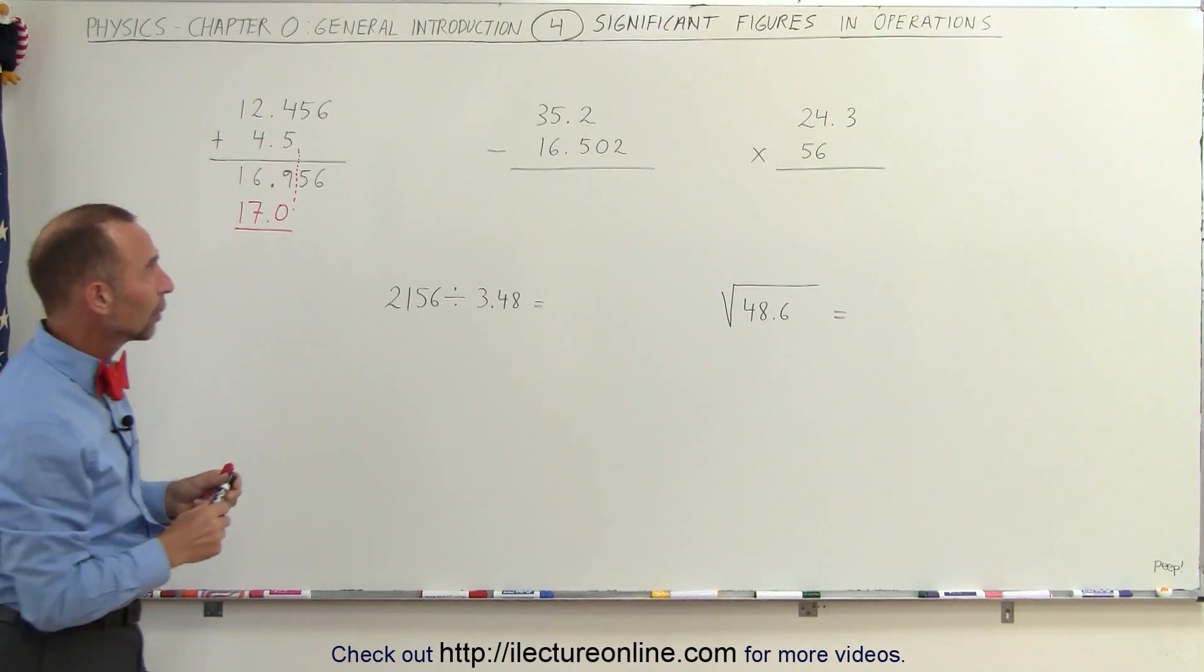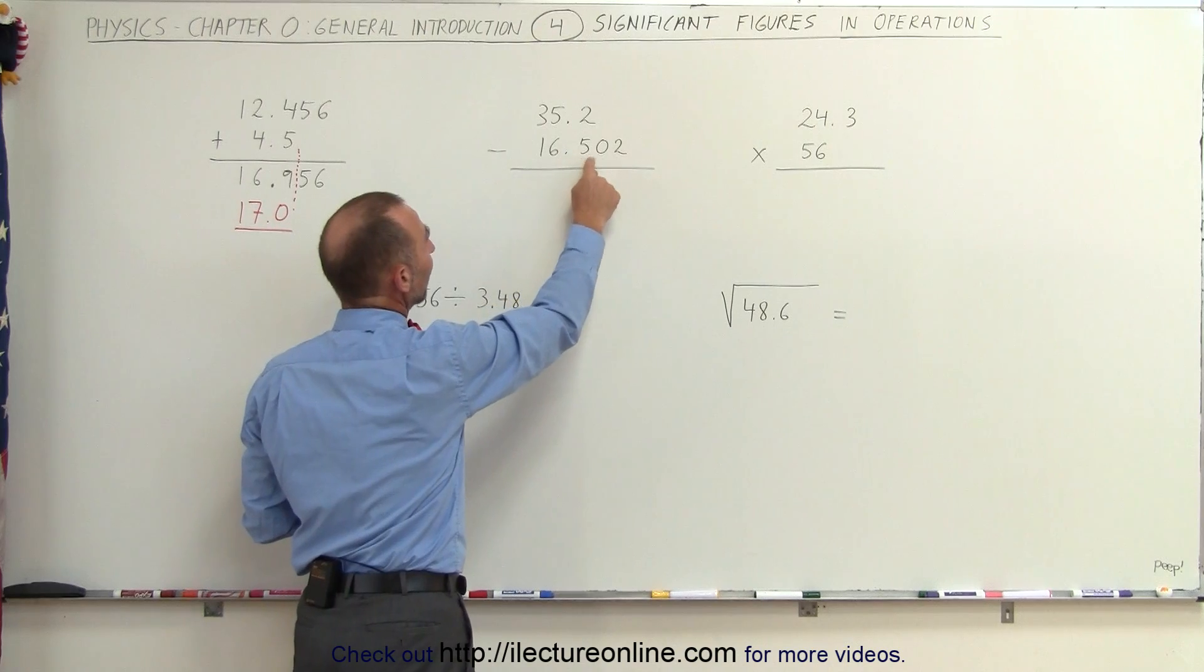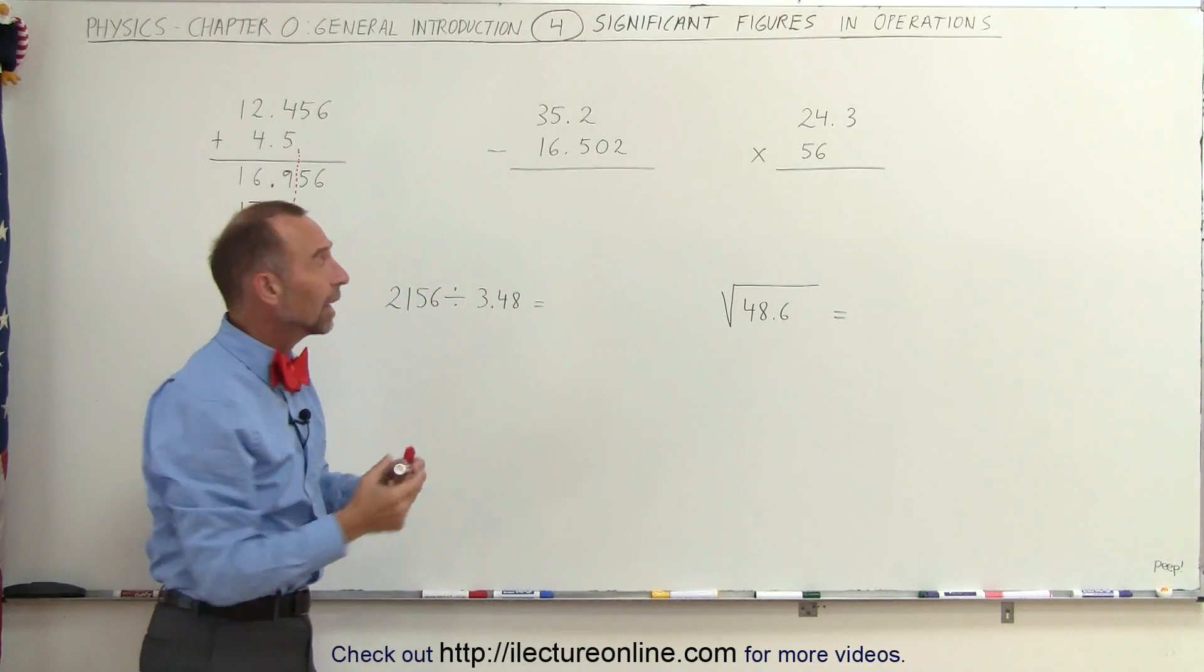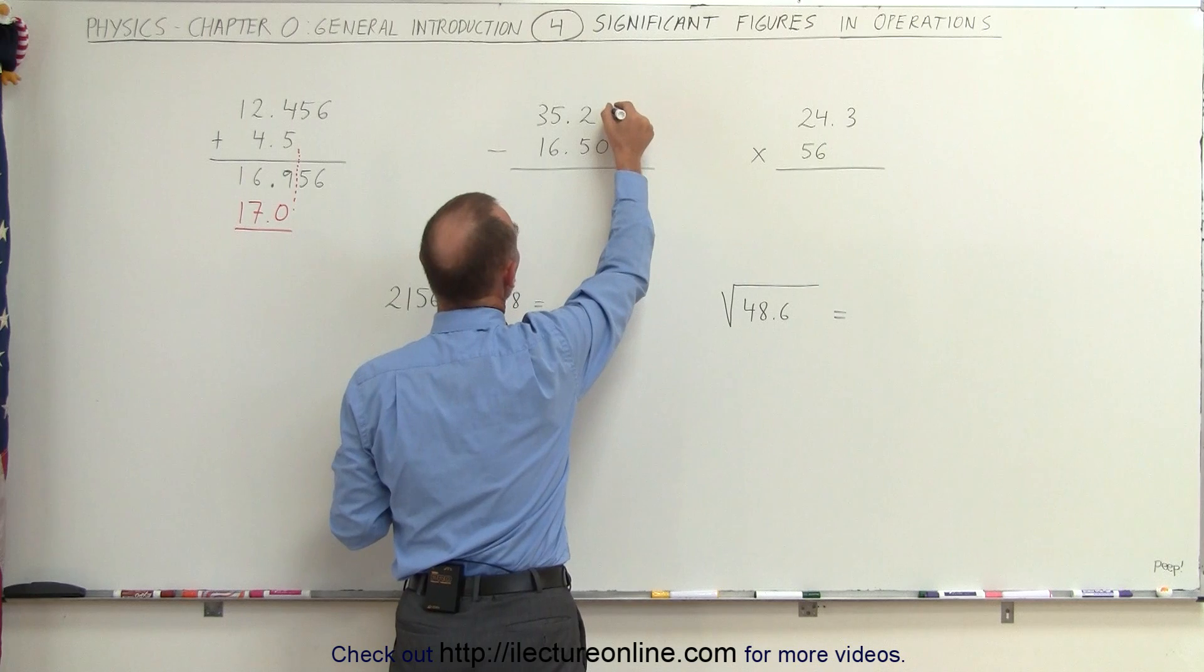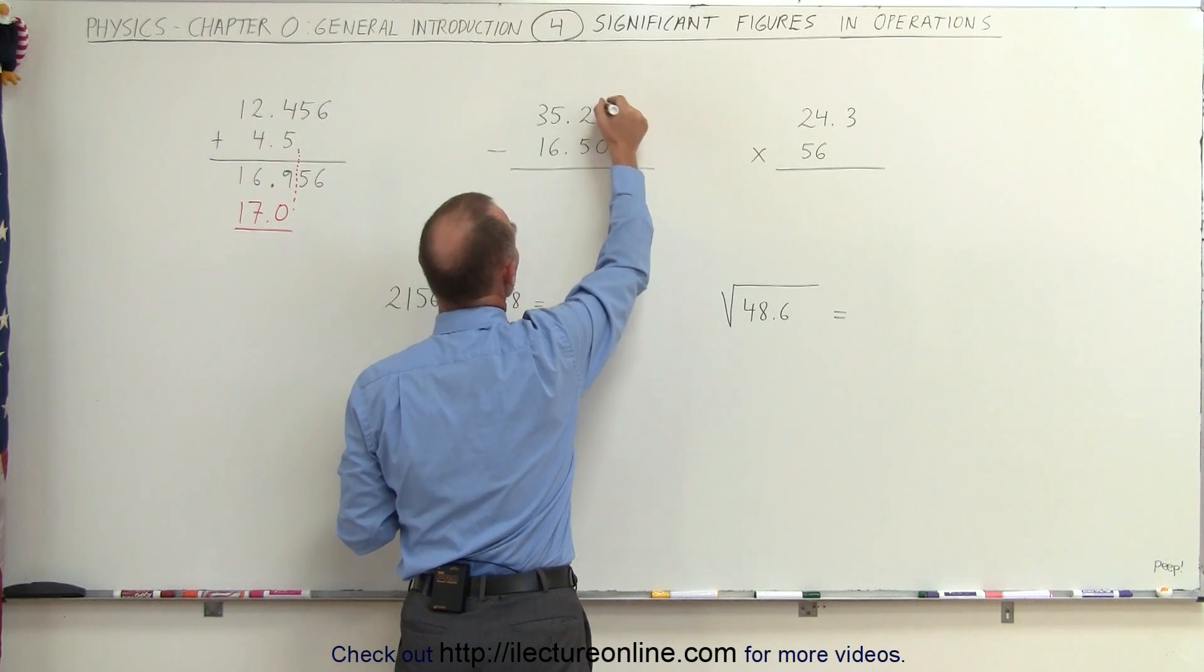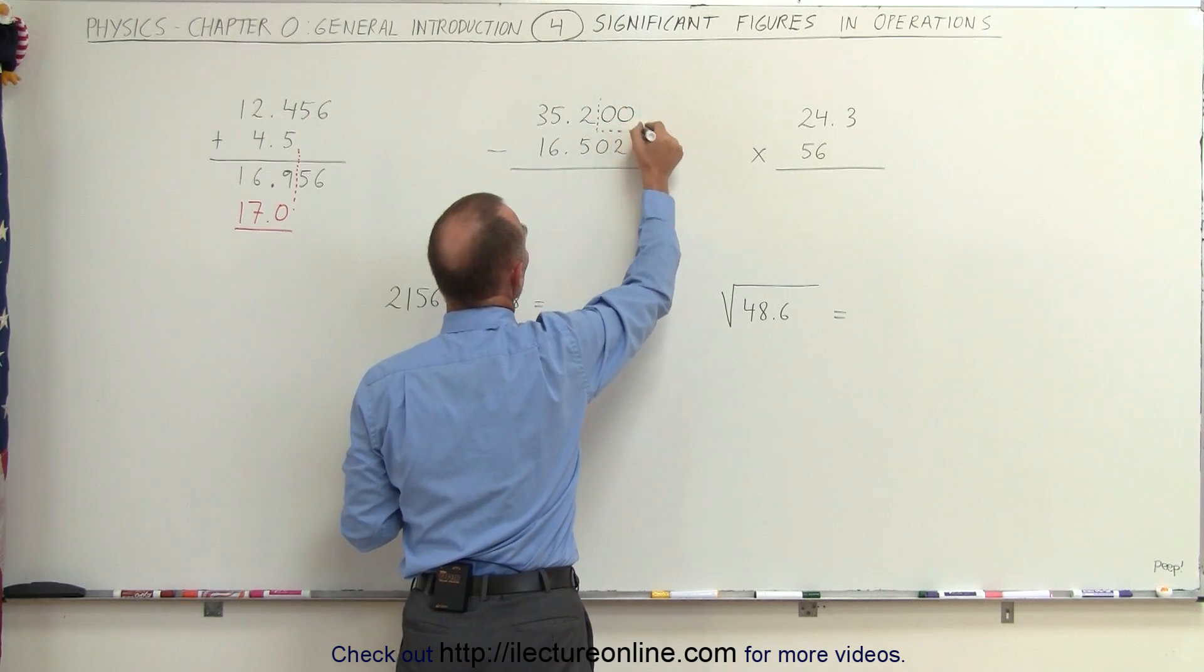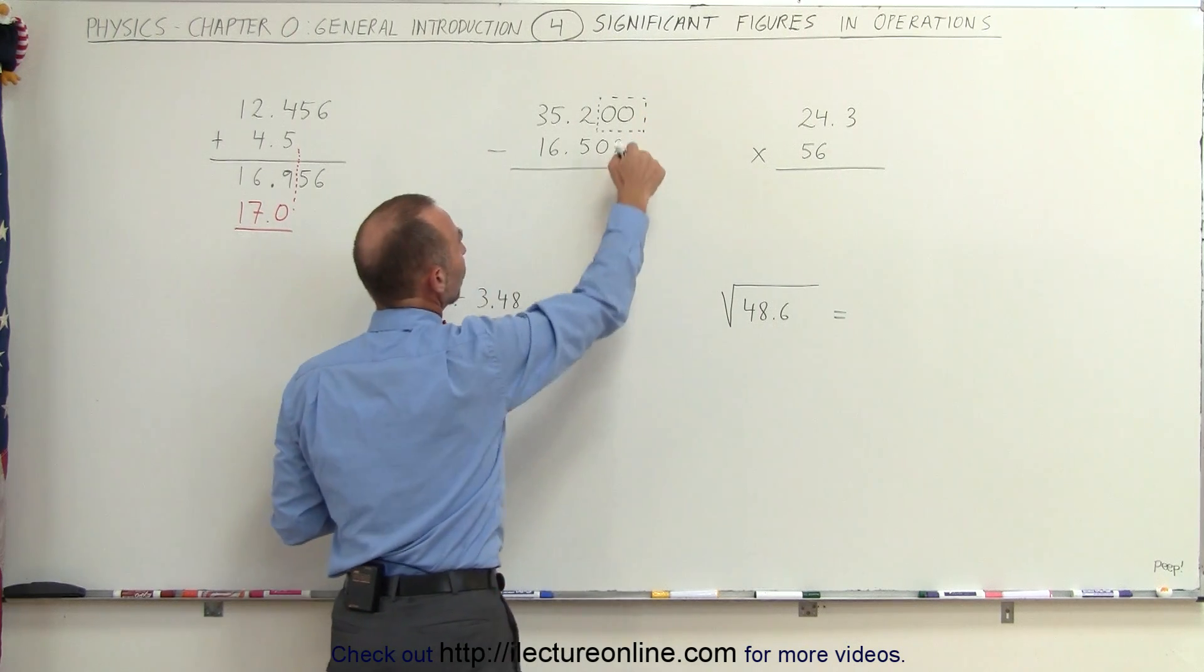Looking at this number right here, we're going to subtract 16.502 from 35.2. Well, to do that, we're going to add two zeros. Now are these two zeros significant right here? And the answer is of course not. We just added them so that we can do the subtraction.